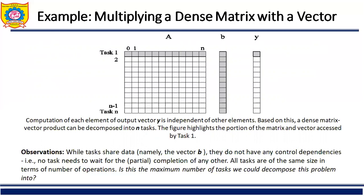In this example, we decompose the matrix into n rows and form n tasks. Each task is multiplied independently with the vector element to get the resultant vector. This is a matrix-vector multiplication example — a very important one that will also appear later in our syllabus.